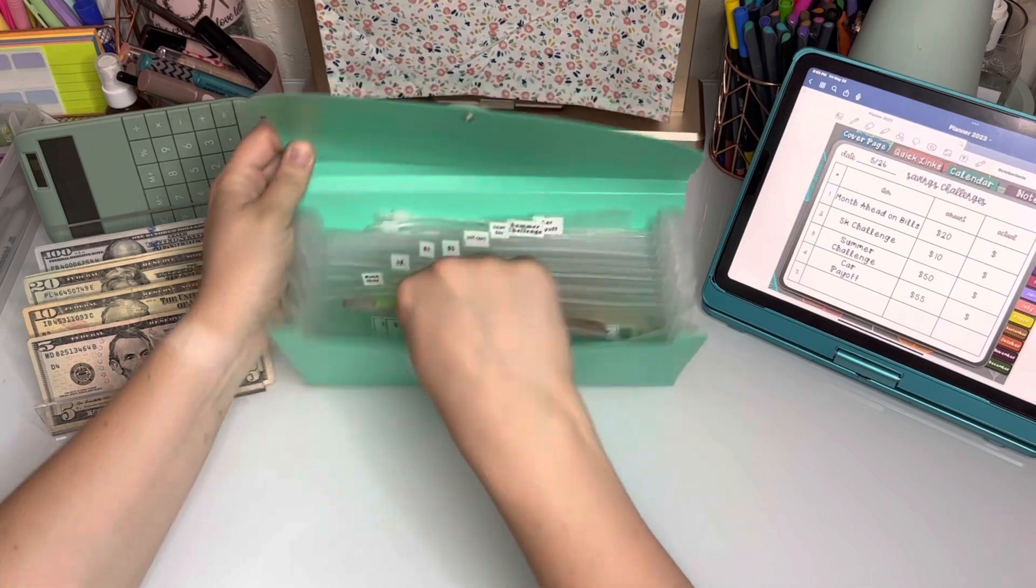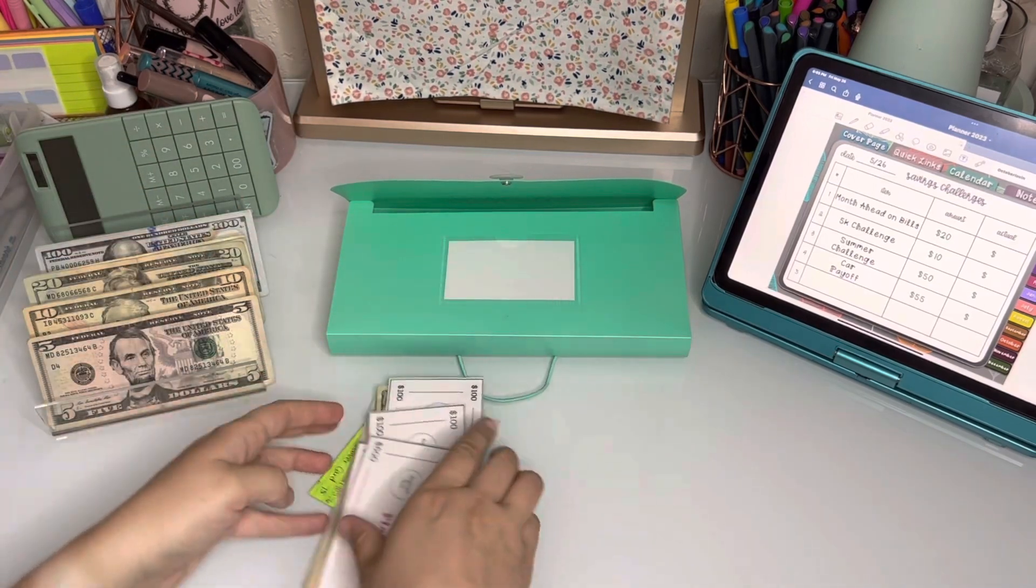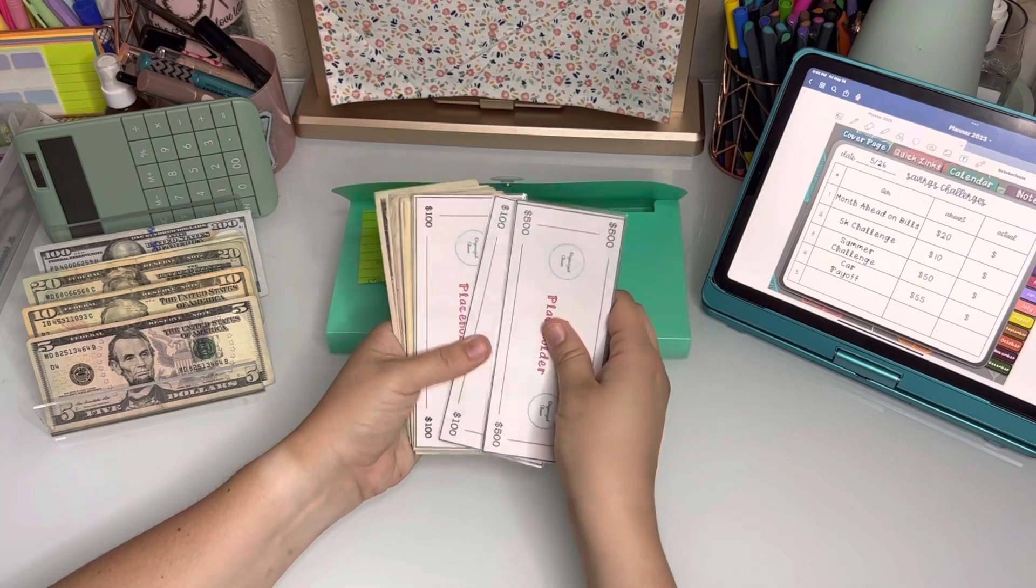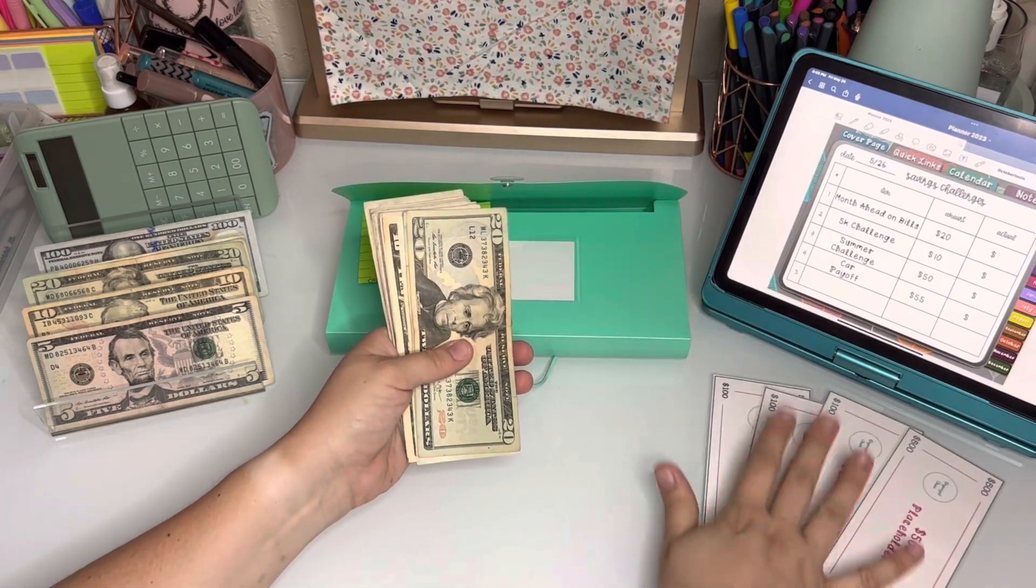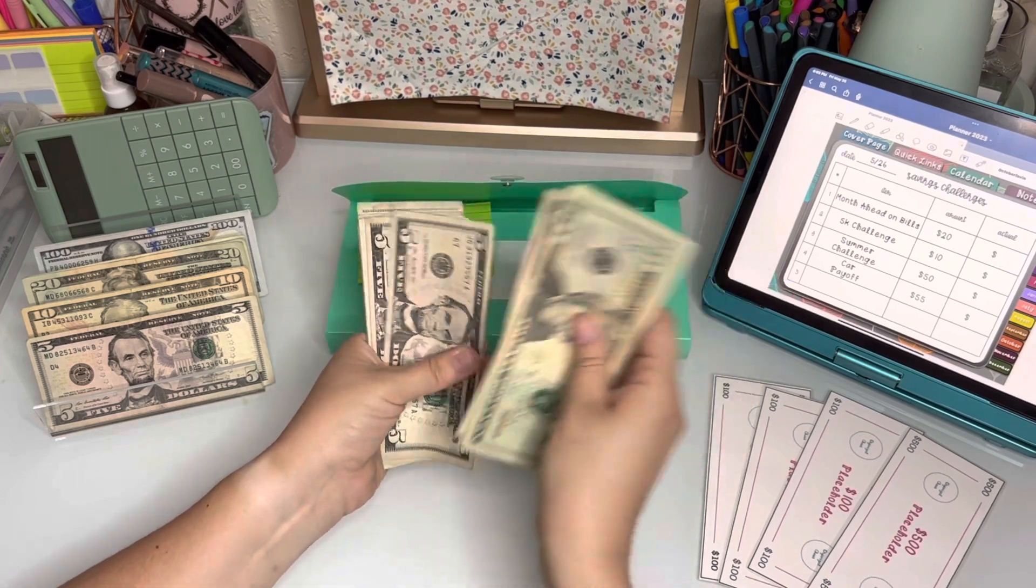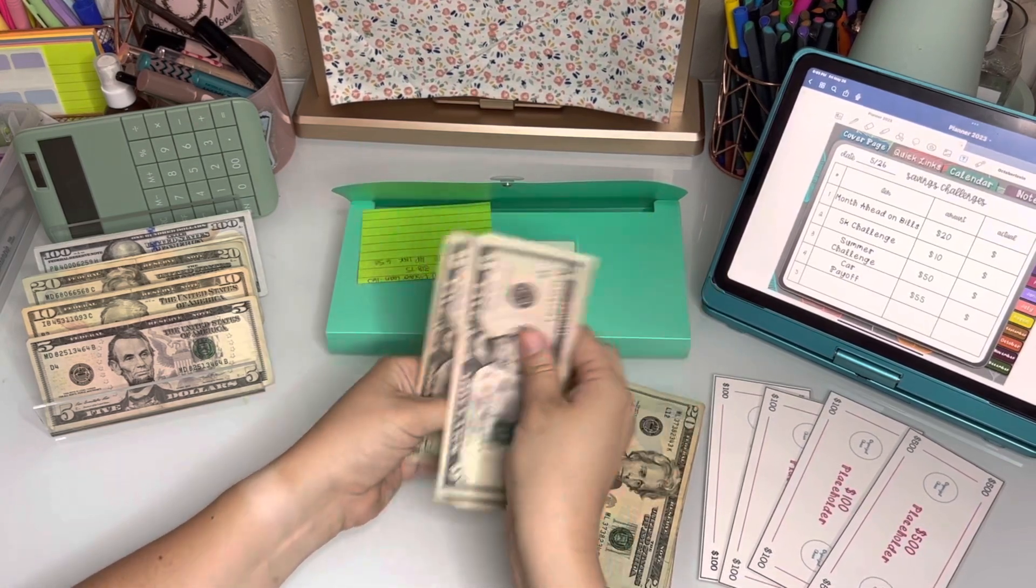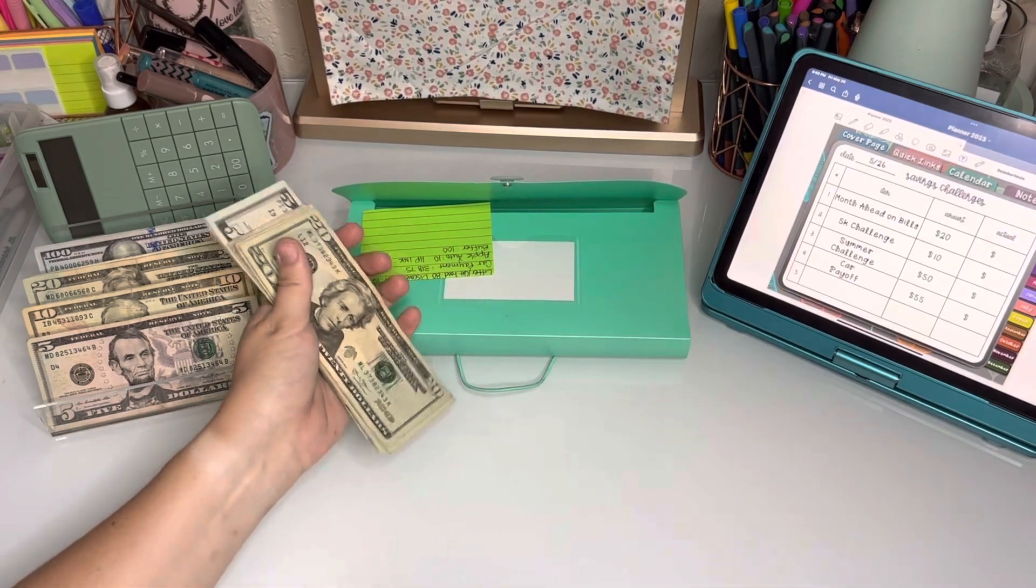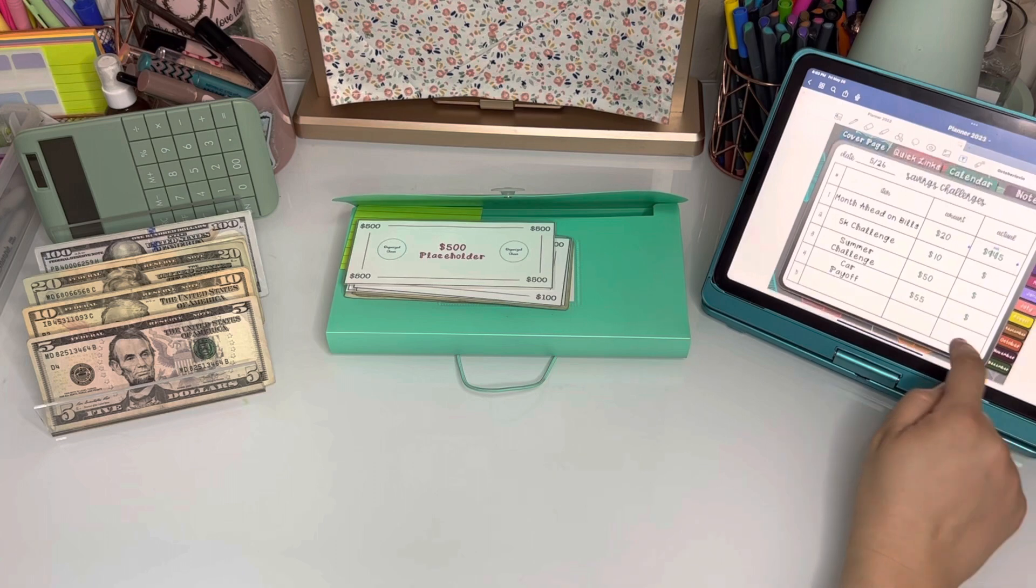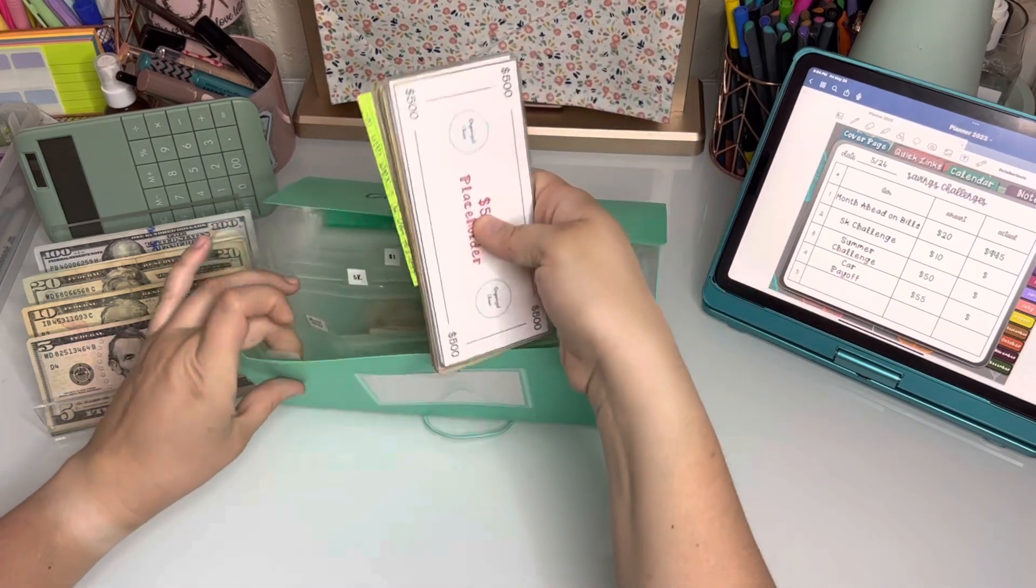Month ahead is going to get $20 today and it's already got a good chunk of change in here. [counts money] $945 for month ahead, which is a great number for me. I just get so happy every time I see that. Like I'm almost able to pay a whole month's worth of bills ahead of schedule. Like I've never been able to do that. That is so exciting.